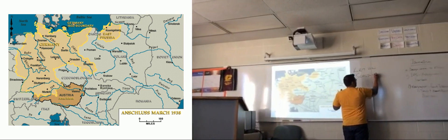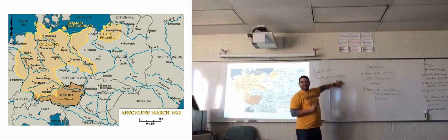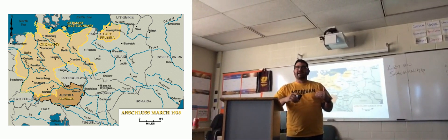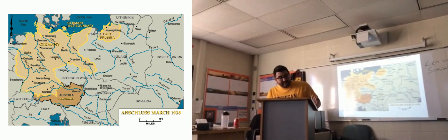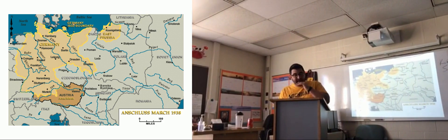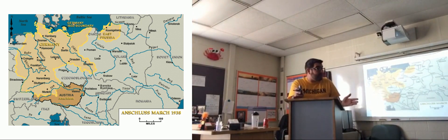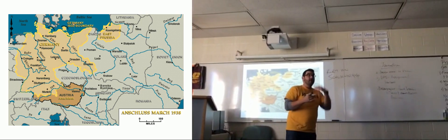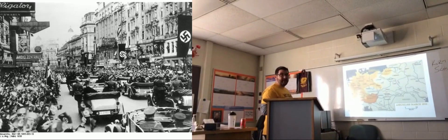His name is spelled S-C-H-U-S-C-H-N-I-G-G — the double G at the end in German has a sound like an H, so it's pronounced Schuschnigg. Kurt von Schuschnigg is the chancellor of Austria in 1938. With political violence in Austria executed largely by Austrian Nazis, Schuschnigg, hoping to resolve this situation, requests a meeting with Adolf Hitler. He meets with Hitler in Germany.